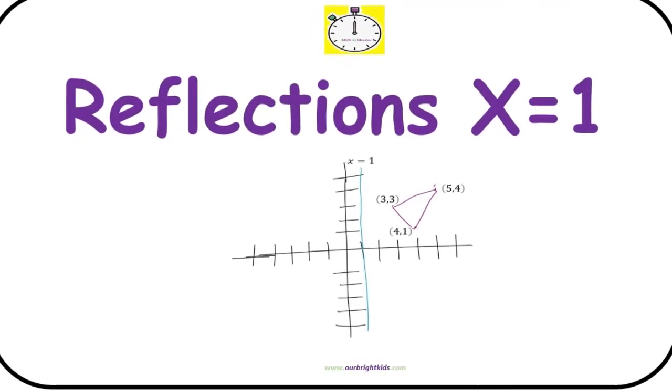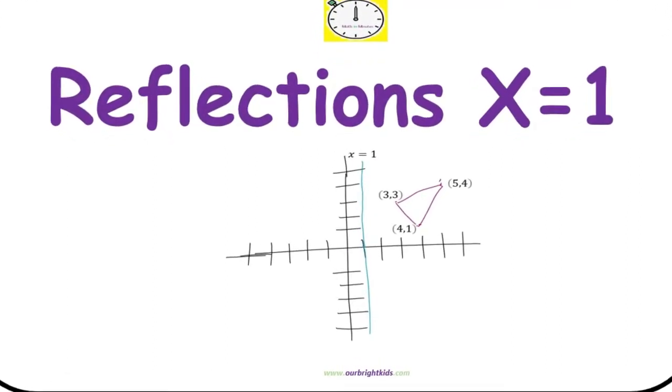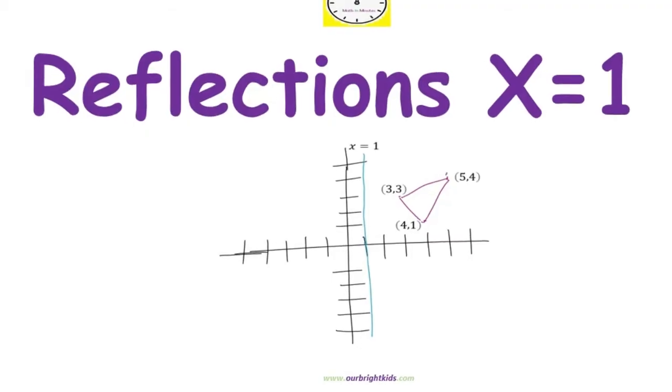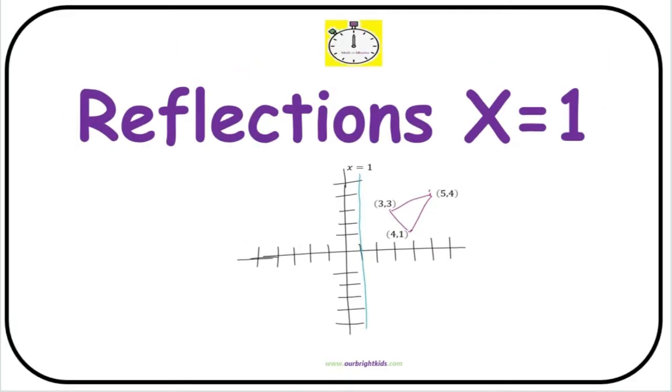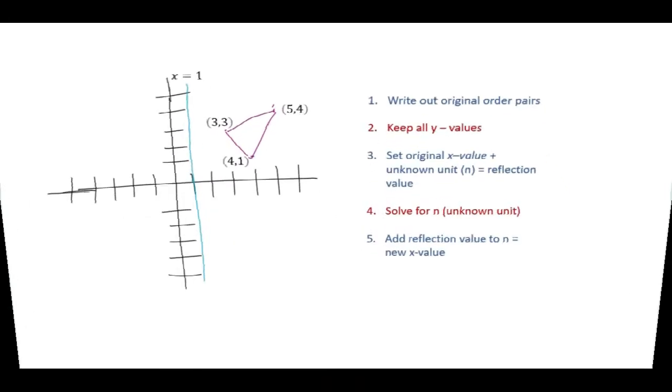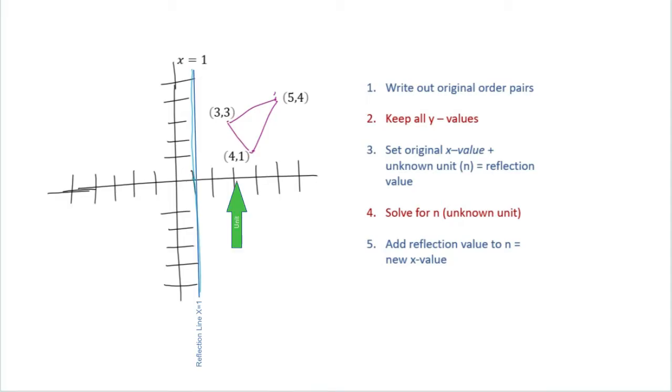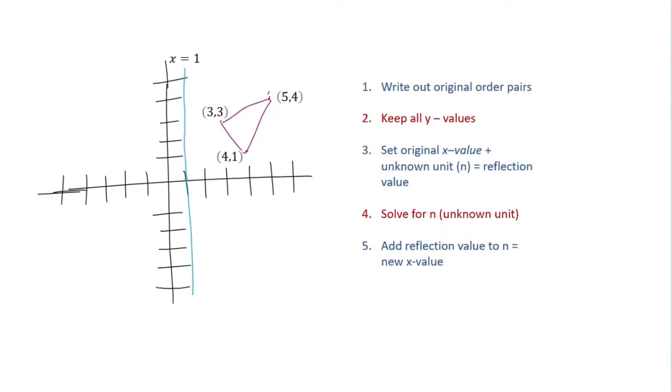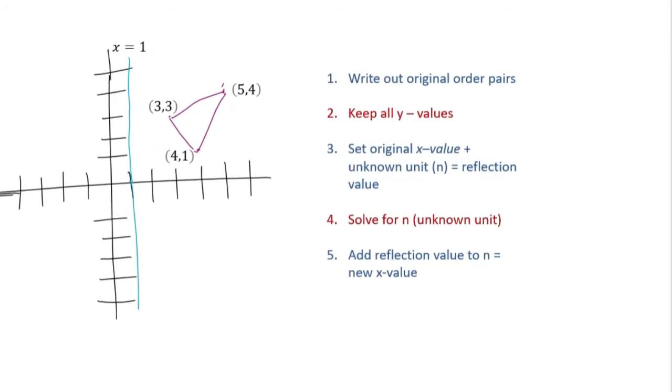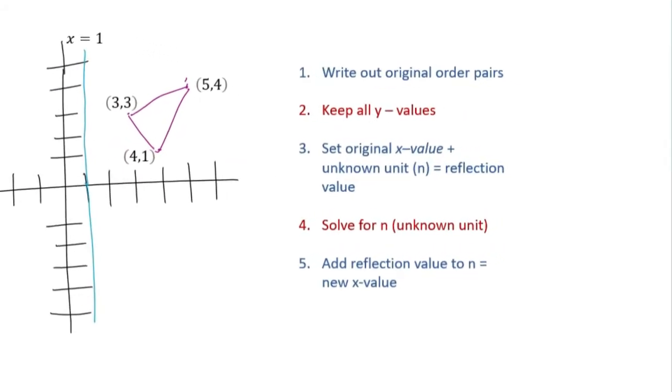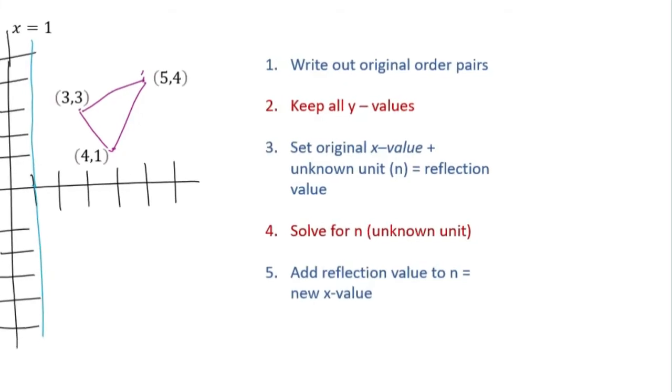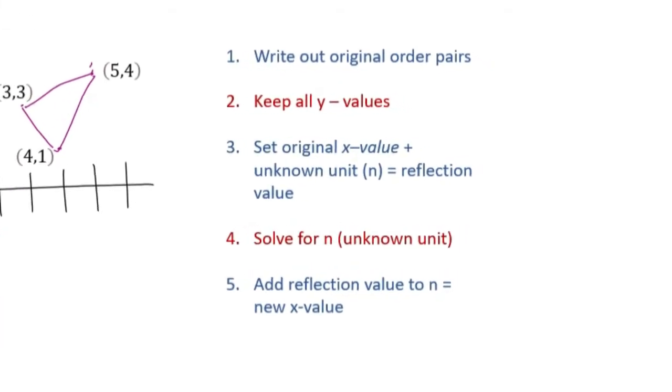This Math in Minute video goes through the steps to do reflections when x equals 1. Basically, when you're doing reflections, you want to know how many units you are away from the line of reflection. Here are five easy steps that you can use to calculate what your reflection ordered pairs would be.